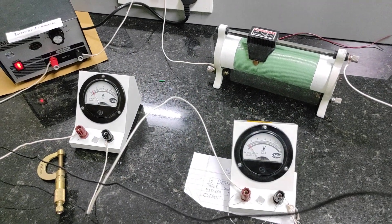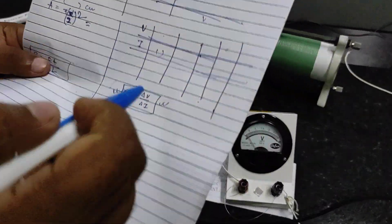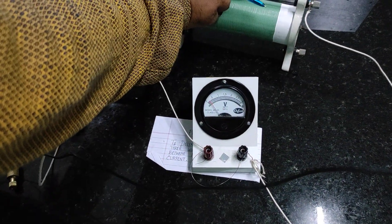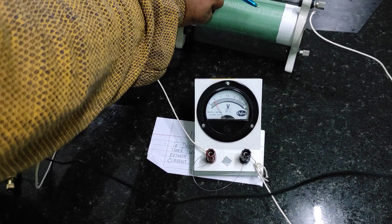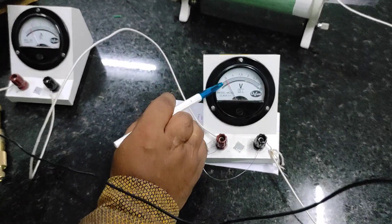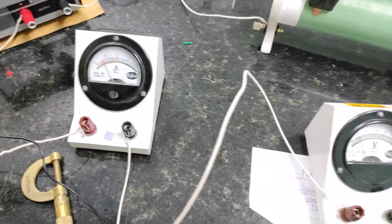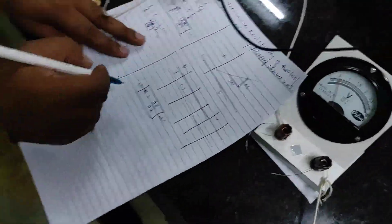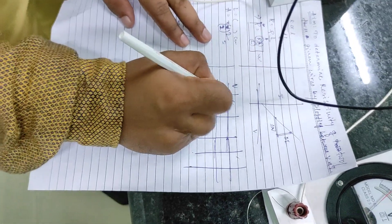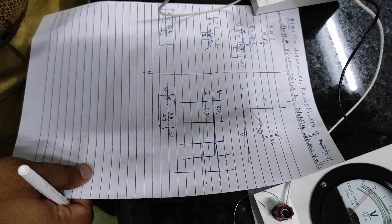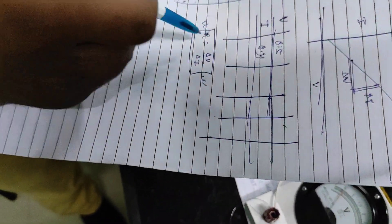I'll change the knob of the rheostat and take different values of voltage and current to fill up this table. At one instant, the voltage is 0.5 volt and the current is approximately 0.4 ampere. I'll record it: voltage 0.5 V, current 0.4 A. I'll keep changing the rheostat, taking different records, then draw the plot and calculate the resistance from it.